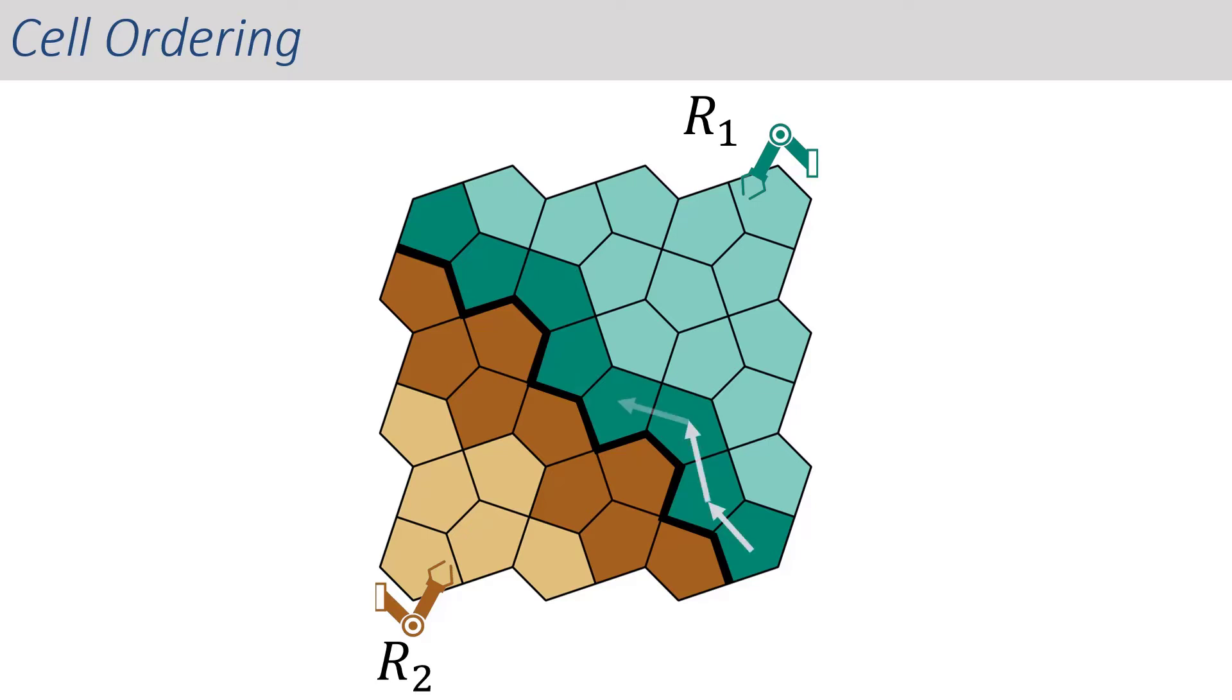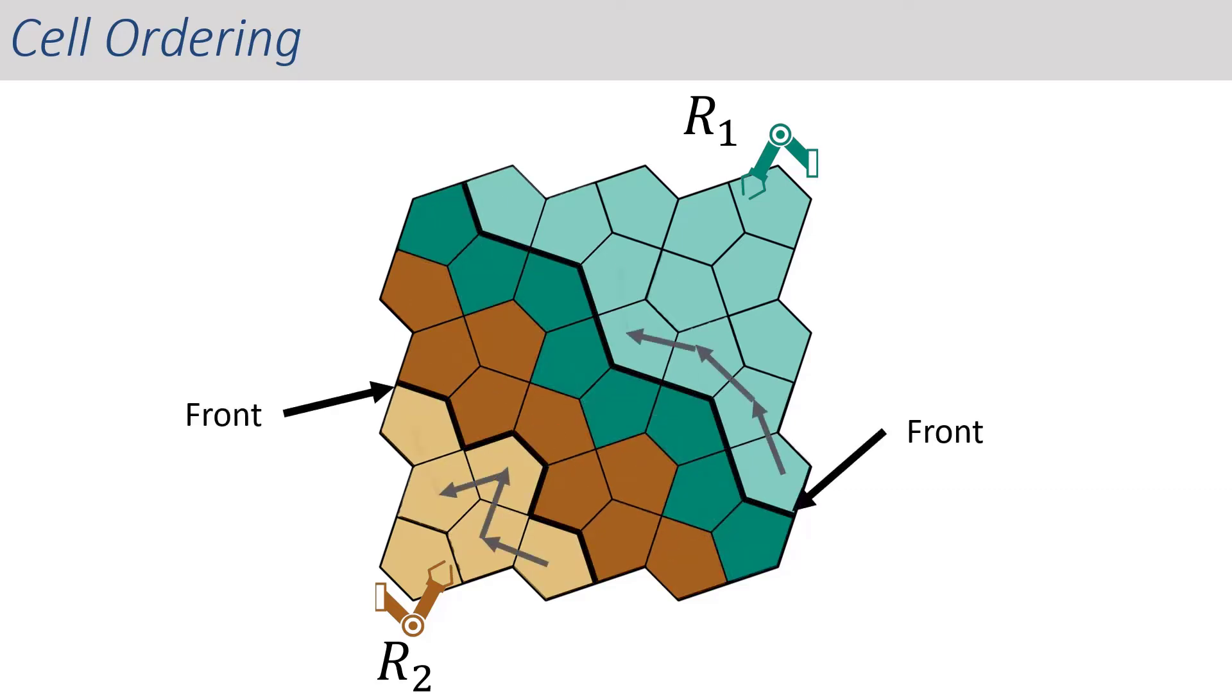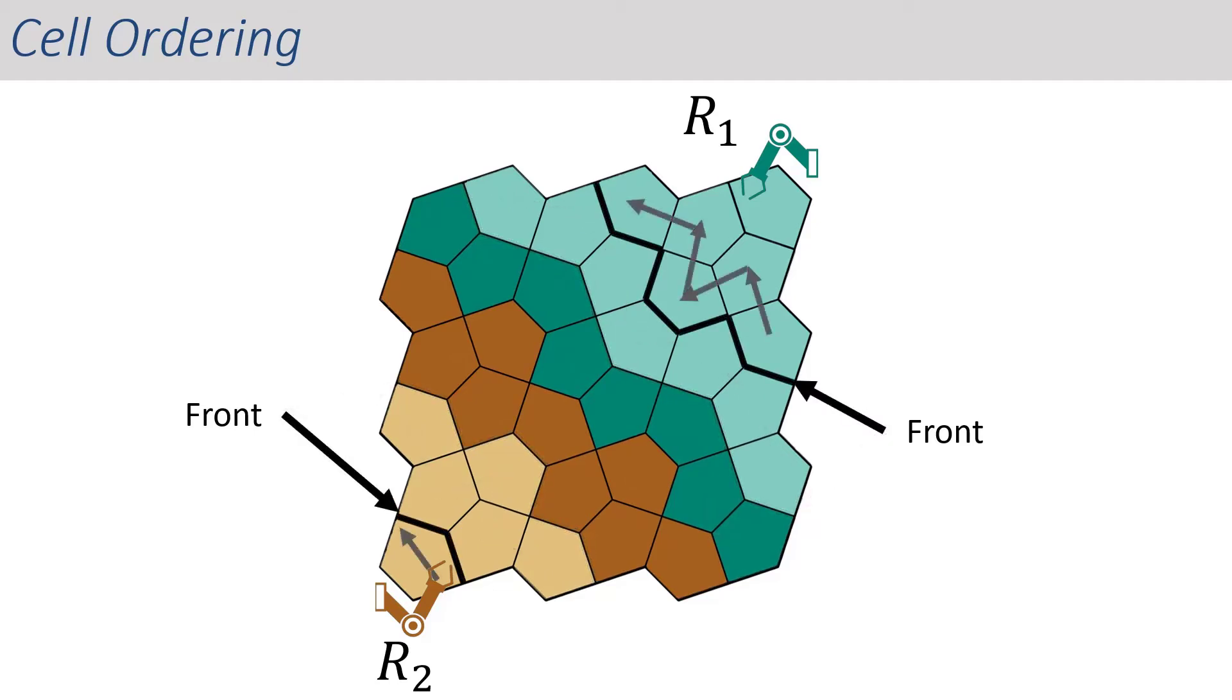We start by printing the interfacing cells for each robot independently. First, robot 1 prints along the interfacing path, then robot 2 prints along the interfacing path. Once this is done, the robots can work collaboratively to print the non-interfacing cells using a moving front strategy to order cell printing. This moving front strategy continues until all cells are printed.